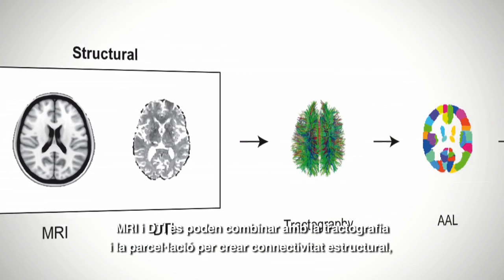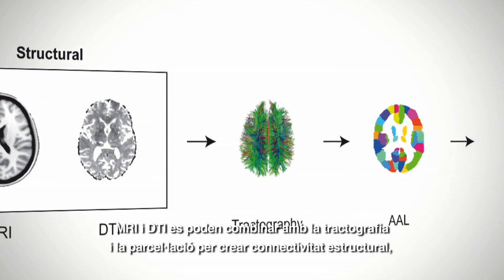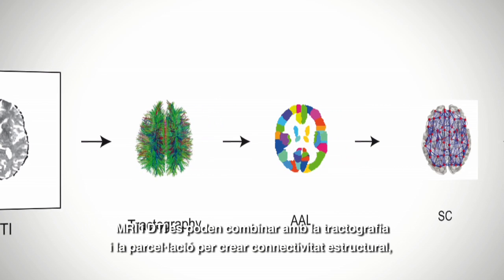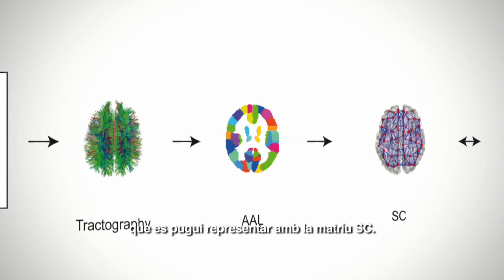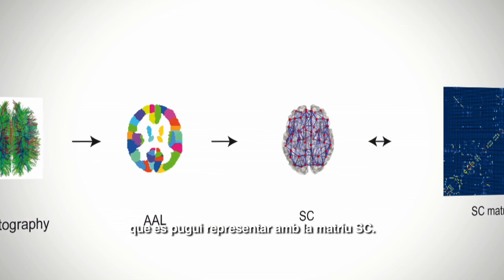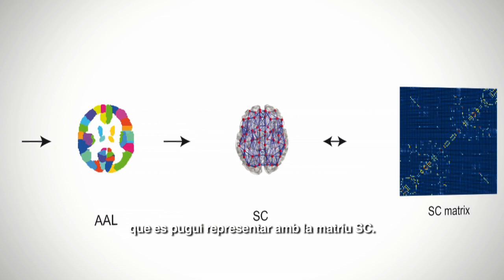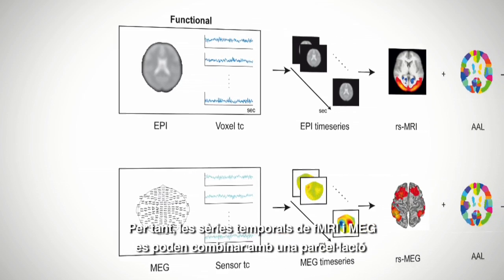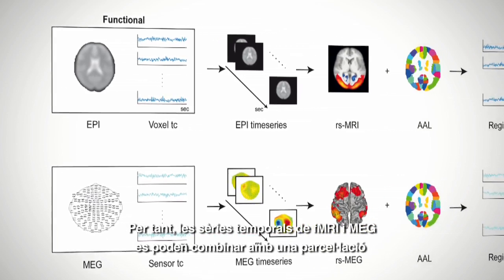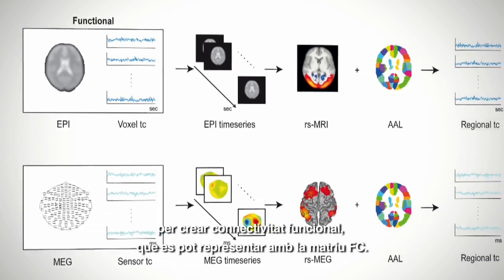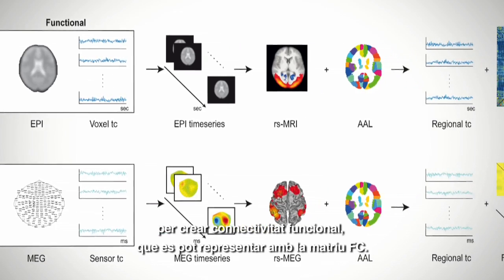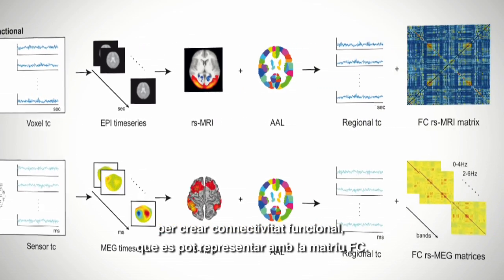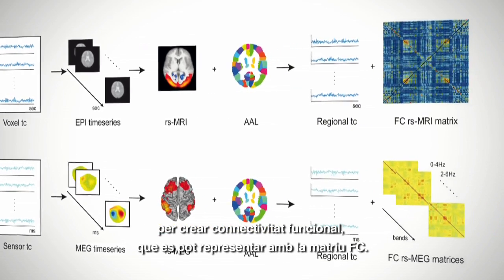MRI and DTI can be combined with tractography and parcelation to create structural connectivity (SC), which can be represented with the SC matrix. fMRI and MEG time series can be combined with a parcelation to create functional connectivity (FC), which can then be represented with the FC matrix.